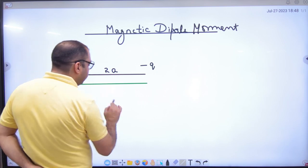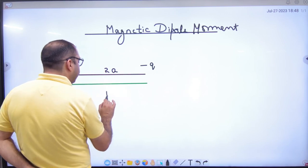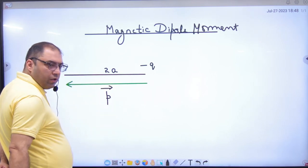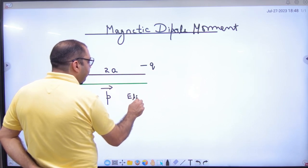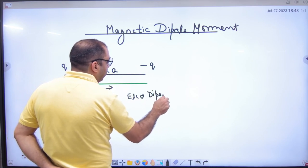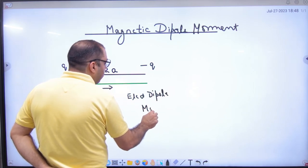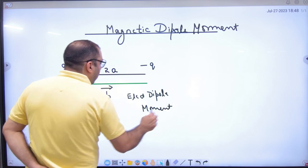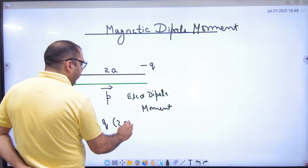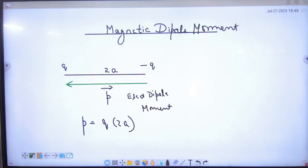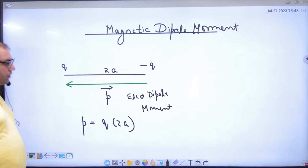What did we take in this? Dipole moment. Remember, dipole moment is P-vector. And if I tell you what is P-vector? It's called Electric Dipole Moment. And what is the magnitude of the electric dipole moment? The magnitude was Q into 2a.